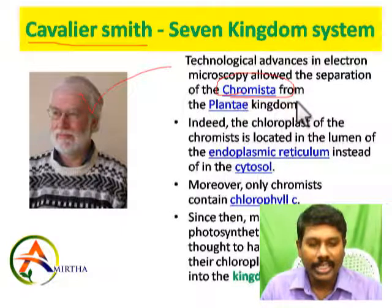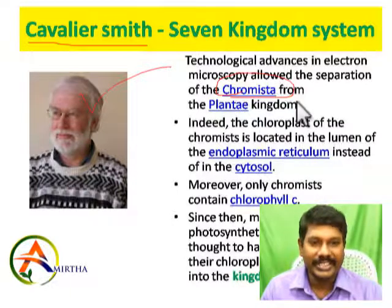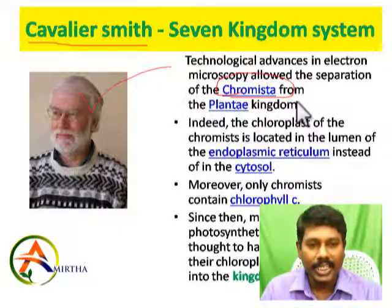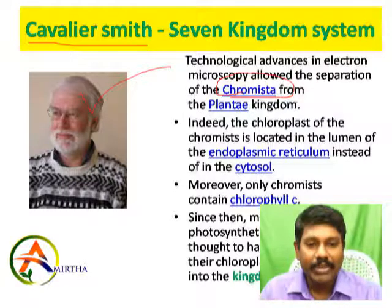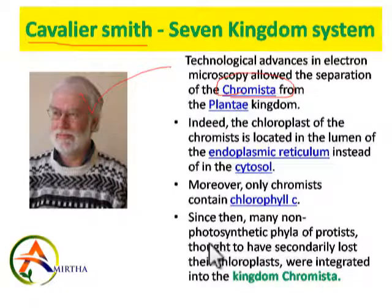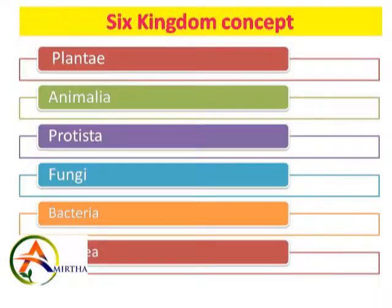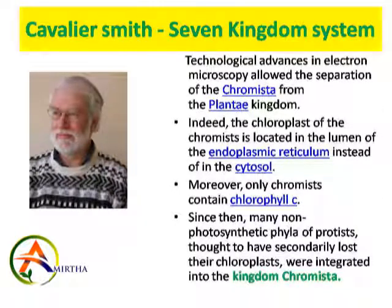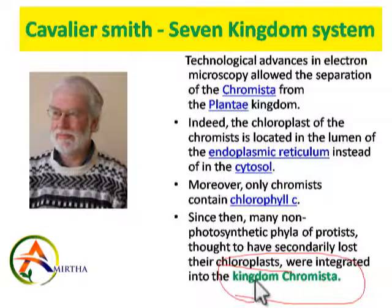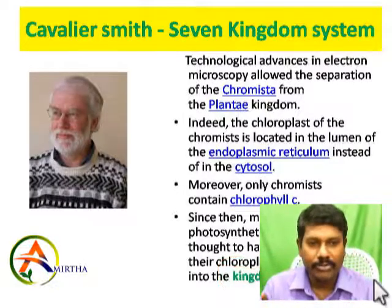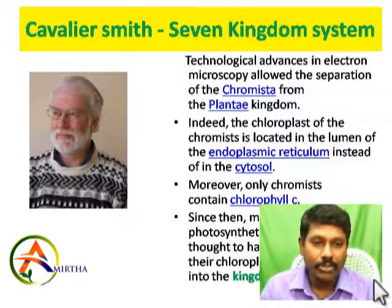So what does that mean? A chloroplast contains chlorophyll A — the universal pigment that gives green color and is responsible for photosynthesis. But some organisms have only chlorophyll C, not chlorophyll A. Also, many non-photosynthetic phyla — protist groups that are non-photosynthetic — have lost their chloroplast and come under the kingdom Chromista.